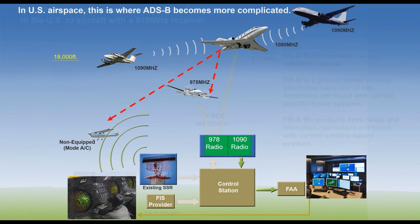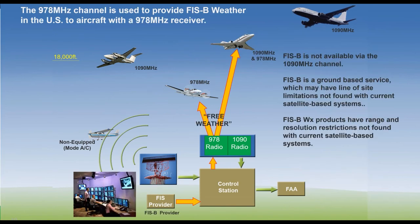How do we solve that? Well, 978 also delivers the free weather. In order to get the free weather, you have to have a 978 receiver.